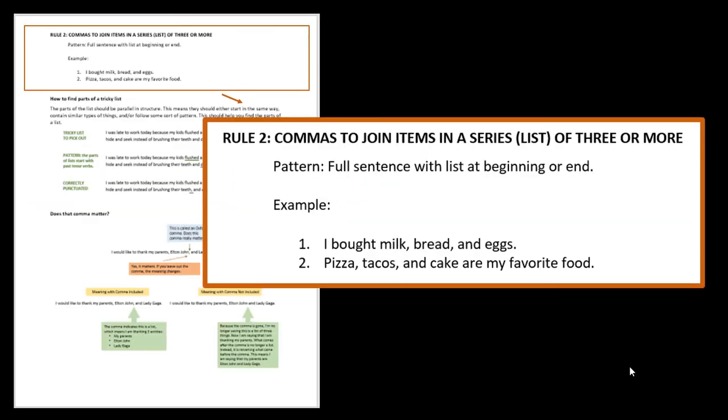All right, we're on to rule number two for the week. This one is actually easy. Understanding why it's important is a little bit trickier. But when you have a series, which is a fancy word for a list of three or more items, you need to put commas between those items in a list. So examples, I bought milk, bread and eggs. We have three things in that list, milk, bread and eggs, and we're going to separate them with the commas.